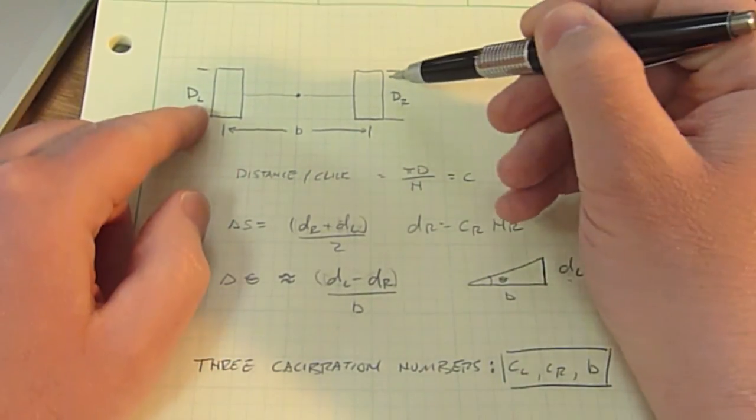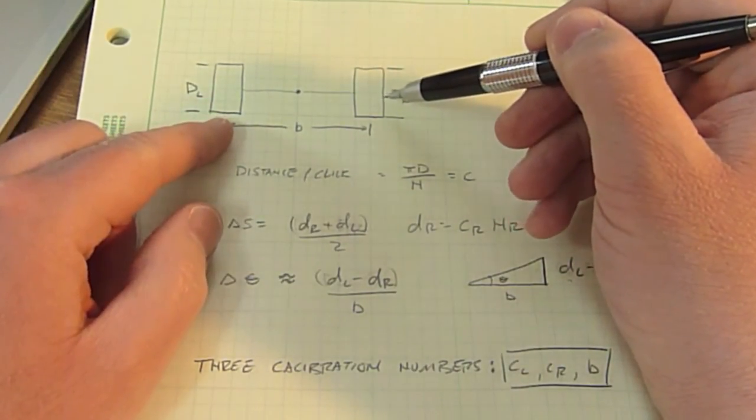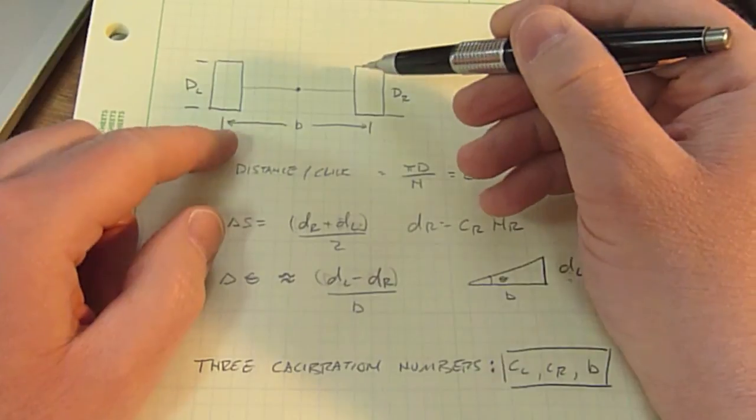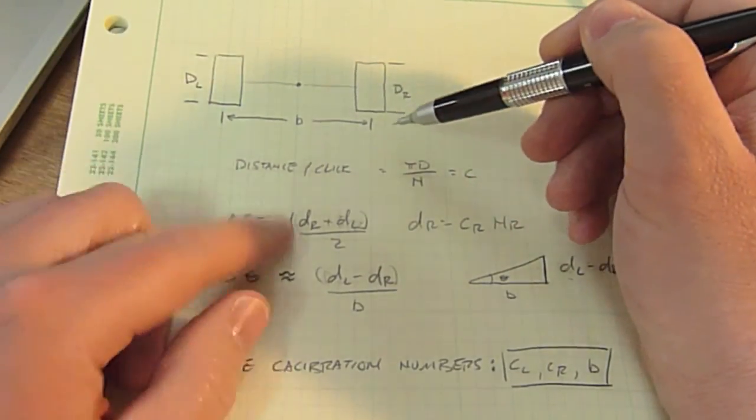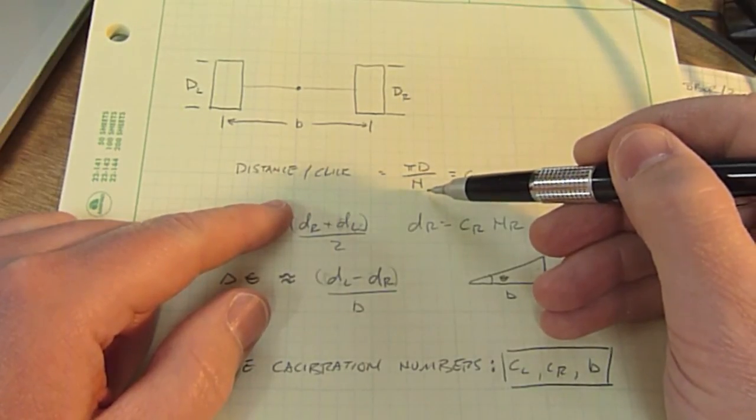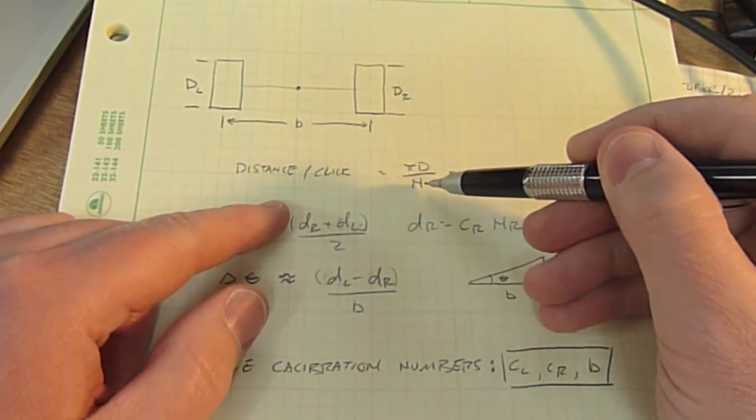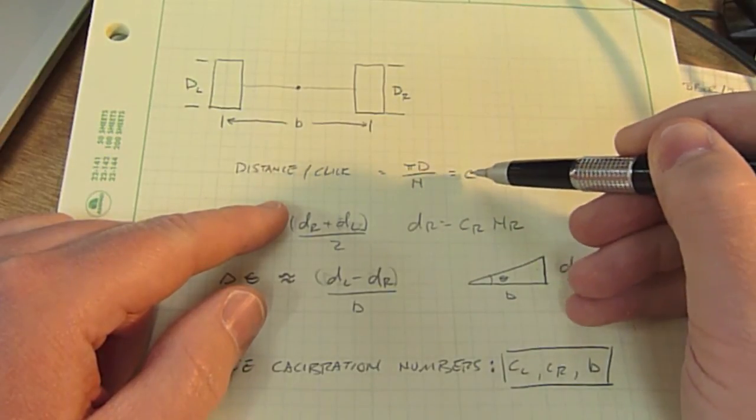DR and DL are the diameters of the left and right wheels, and in general they're not exactly the same. If we have an encoder wheel inside our rim that gives us n clicks per revolution, then the distance we travel per click is just the diameter divided by the number of clicks per revolution. We'll call that C, our calibration factor.